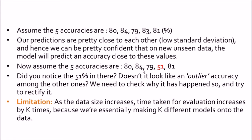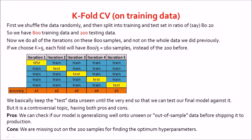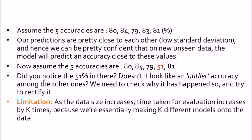One limitation of k-fold cross-validation is that as the data size increases, the time taken for evaluation also increases by k times, because we are essentially making k different models. If we choose k=5, we make 5 models; if k=10, we make 10 models. In real life with millions of data samples, it gets inconvenient, and sometimes a simple train-test split can suffice. It is a matter of preference and how much time you have.